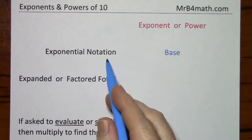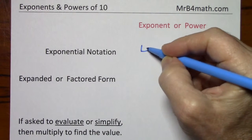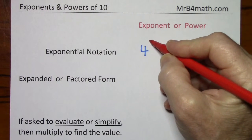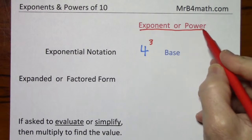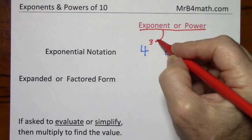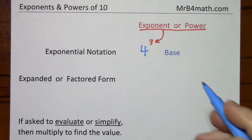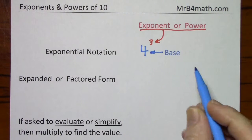A number written in exponential notation looks something like 4 to the third power. This small upper number we refer to as an exponent or a power. The lower number we refer to as the base.